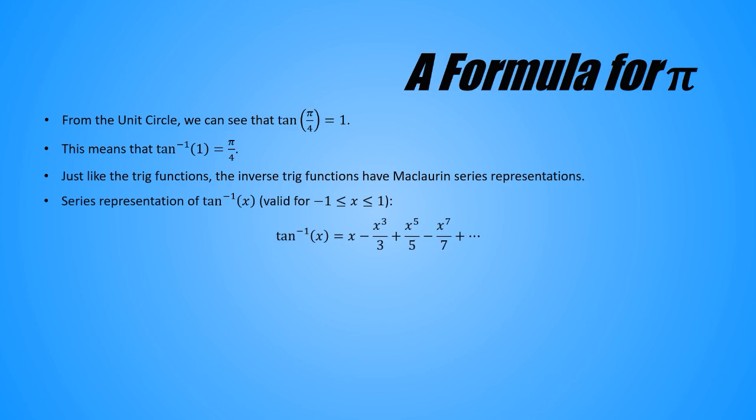Here's the Maclaurin series for the inverse tangent. Its terms are nice and predictable. They alternate signs, have odd exponents, and those odd exponents appear in the denominators. Now plug in x equals 1. We get that the inverse tangent of 1 is equal to 1 minus 1 third plus 1 fifth minus 1 seventh and so on. But the inverse tangent of 1 is pi over 4, remember? So let's make that substitution. Now we'll multiply both sides by 4 to solve for pi.